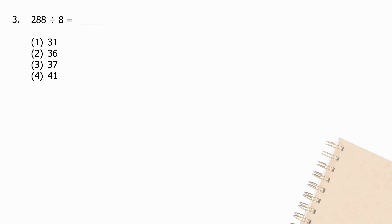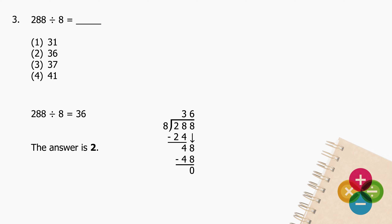Question 3: Divide 288 by 8 and the quotient is the missing number. Dividing 288 by 8, the quotient is 36. The answer is 2.